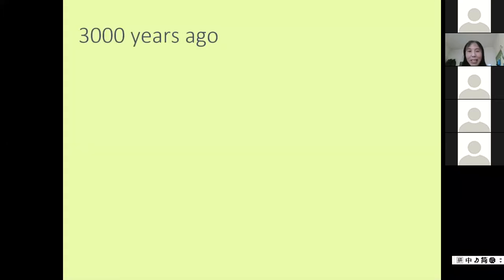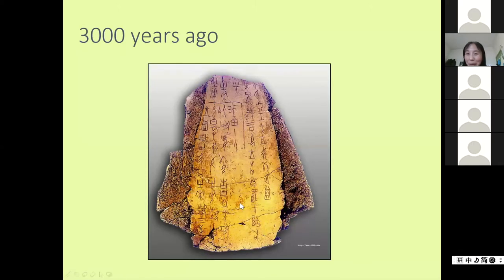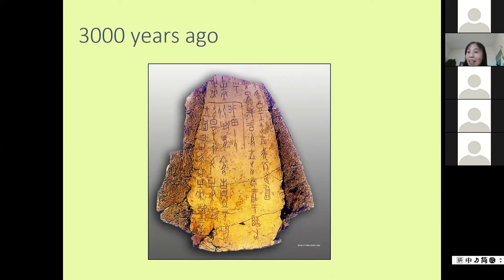First I will talk about the origin of Chinese characters. 3,000 years ago, you can see this picture - you will find some inscriptions on it. These inscriptions are the earliest Chinese characters.